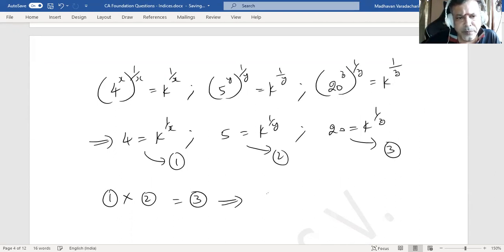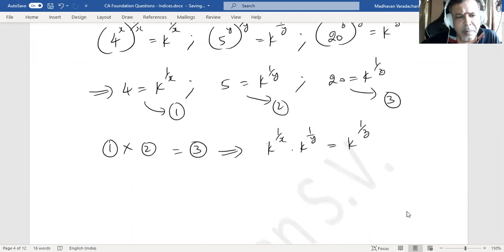This means that k to the power of 1 by x multiplied by k to the power of 1 by y should equal k power 1 by z. Since the base is common on the left side, I can add up the indices.